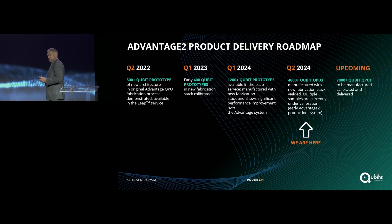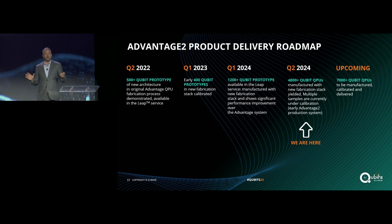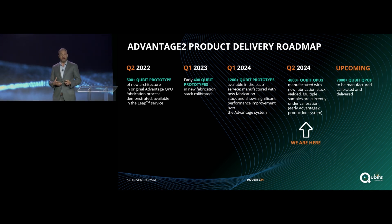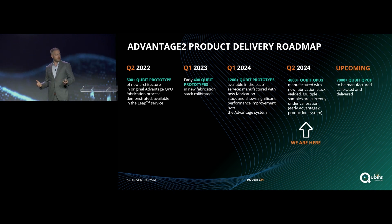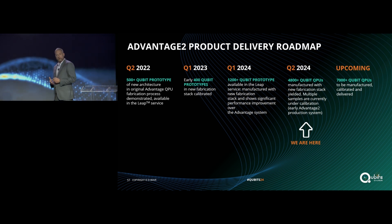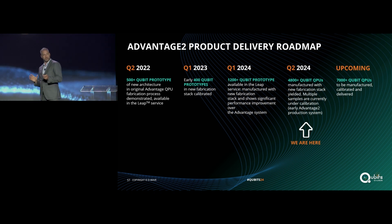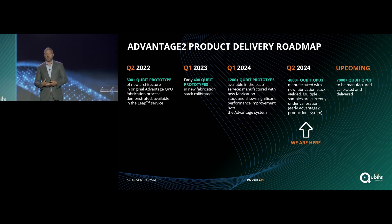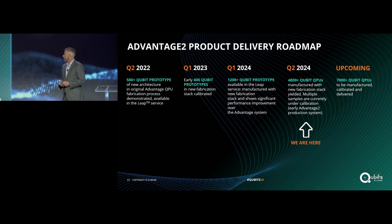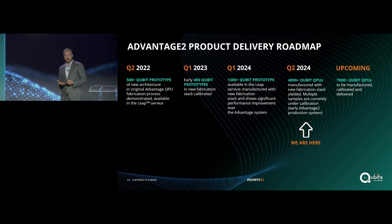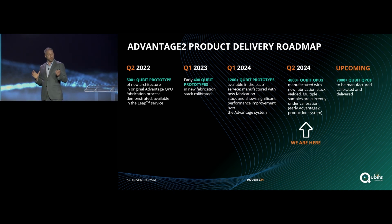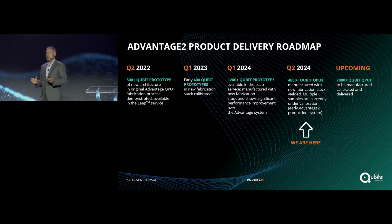The success of our Advantage technology platform — looking carefully at how users are engaging with the technology and at the benchmarking data — has really informed the direction of our next generation solver. We've been hard at work on Advantage 2 for the last several years. Starting in Q2 2022, we made available in LEAP a small-scale prototype of the Advantage 2 architecture, fabricated in our canonical fabrication stack. We then started yielding small-scale 400-qubit prototypes in a new fabrication stack beginning in early 2023.